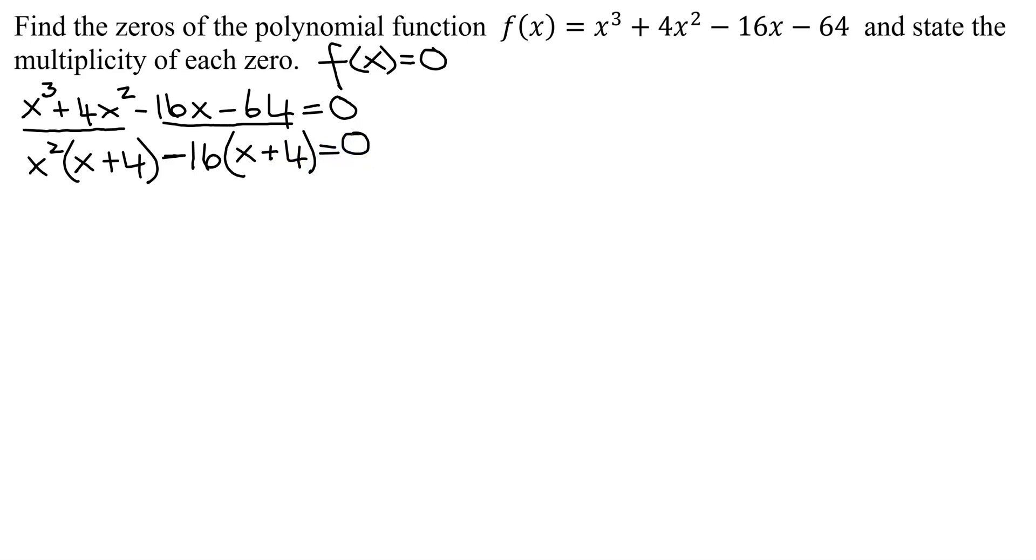Did factoring by grouping work in this case? Is this binomial the same as this one? Yes, so it worked in this case. x + 4 is your common binomial factor that you pull in front. And who does it leave behind? x² - 16. So now I have (x + 4)(x² - 16) = 0.